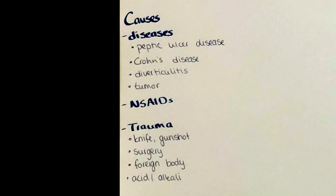A perforation can occur at any part of the GI tract and can be due to many causes. Some of which are traumatic, and others are due to diseases such as peptic ulcer disease, Crohn's disease, diverticulitis, or the growth of a tumor. Those diseases alter the structure and/or blood supply to the intestinal wall.